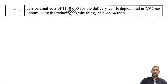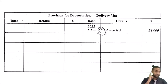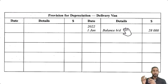Item one says the original cost of $140,000 for the delivery van is depreciated at 20% per annum using the reducing/diminishing balance method. Let me scroll down so you can see the T-account connected to this item. You're seeing the provision for depreciation — delivery van — with debit and credit sides. The opening balance brought down as of 1 Jan 2022 is $28,000 on the credit side, representing all accumulated depreciation previously charged on this delivery van.